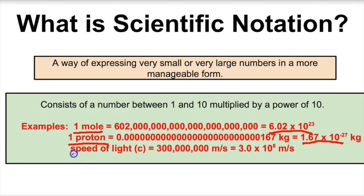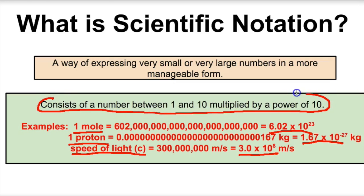Let's take a look at the speed of light. When we talk about the electromagnetic spectrum later in the school year we'll discuss the visible light spectrum. The speed of light is 300 million meters per second — the fastest thing in the universe. We can convert this to scientific notation: 3.0 times 10 to the eighth meters per second. Scientific notation always consists of a number between 1 and 10 multiplied by some power of 10.